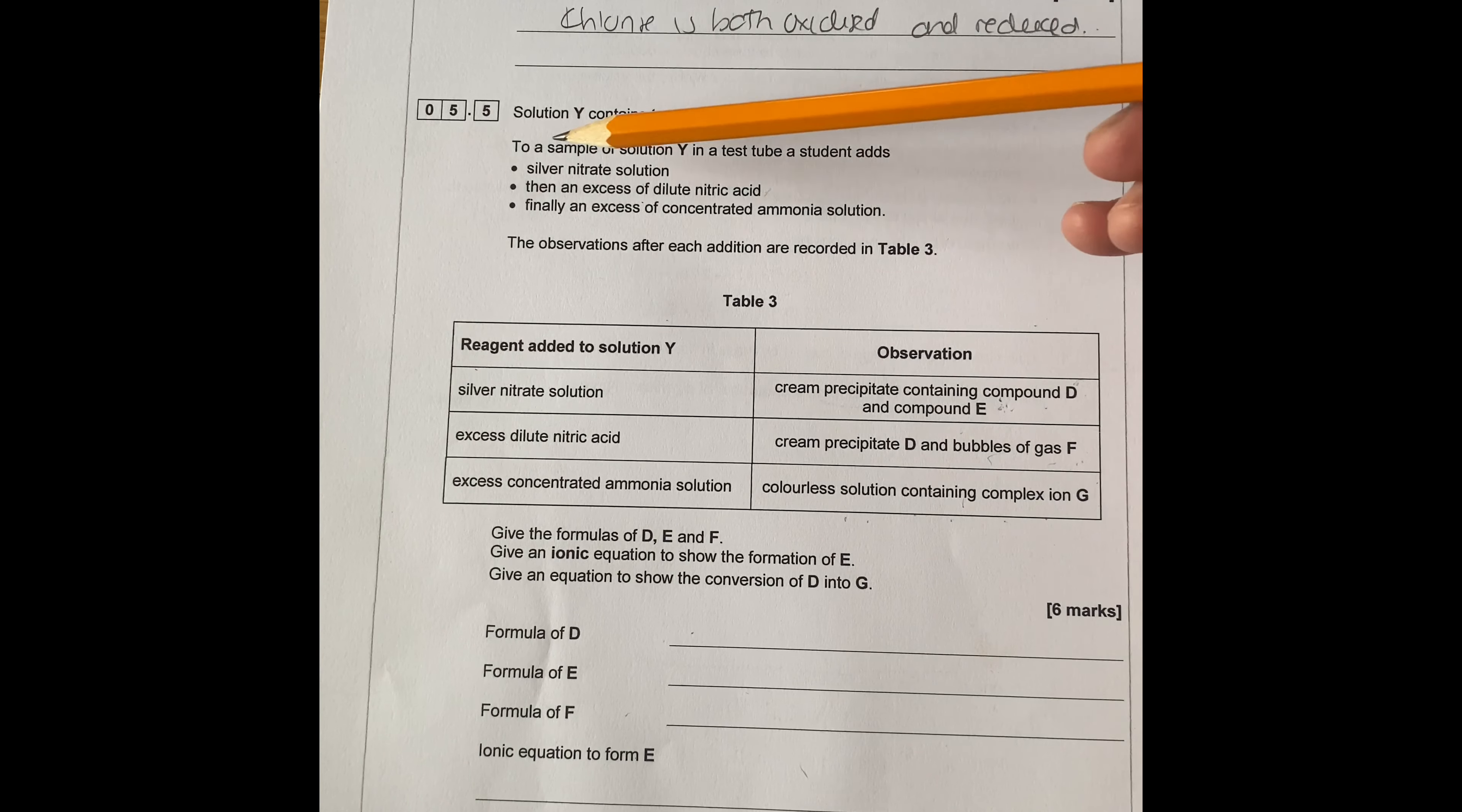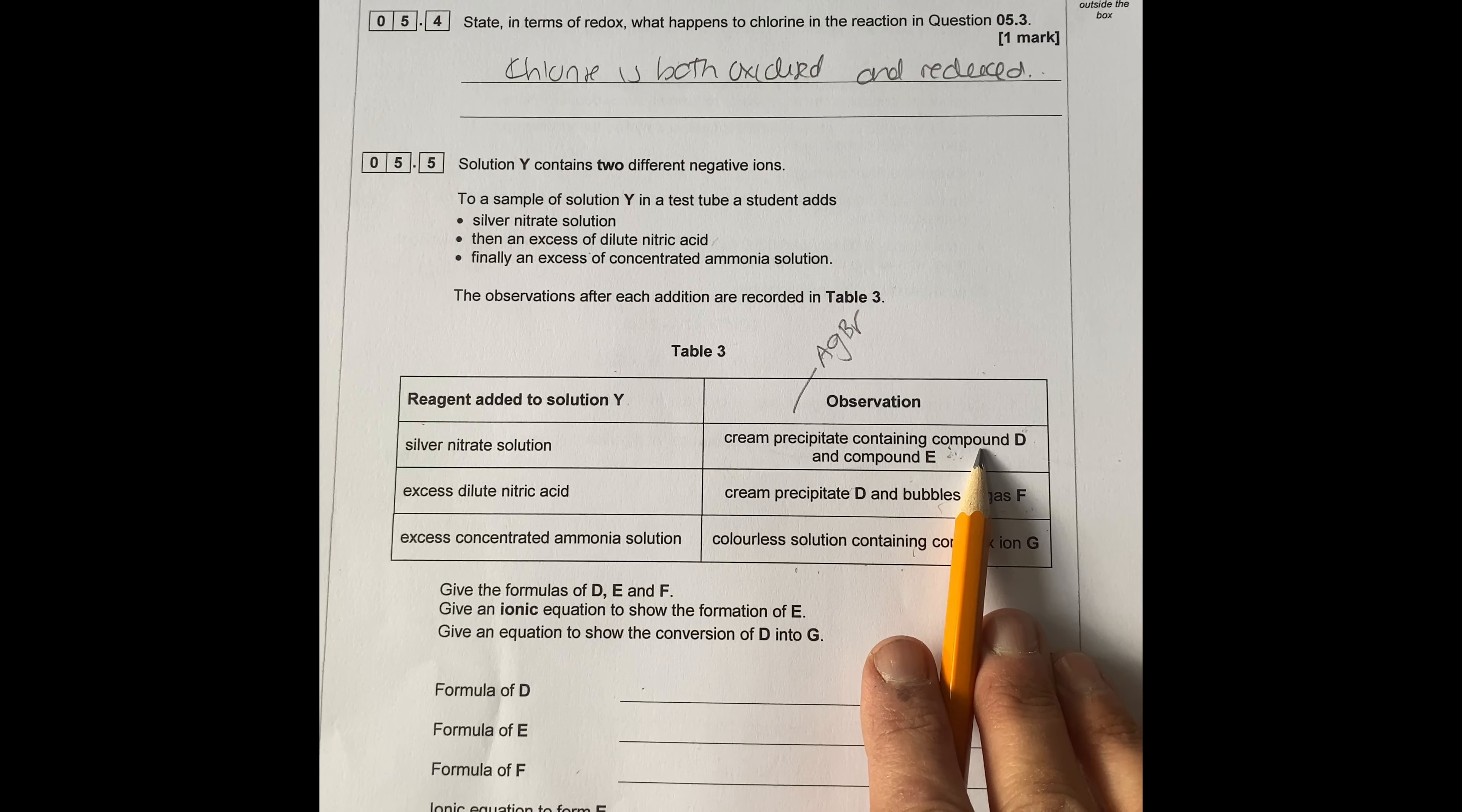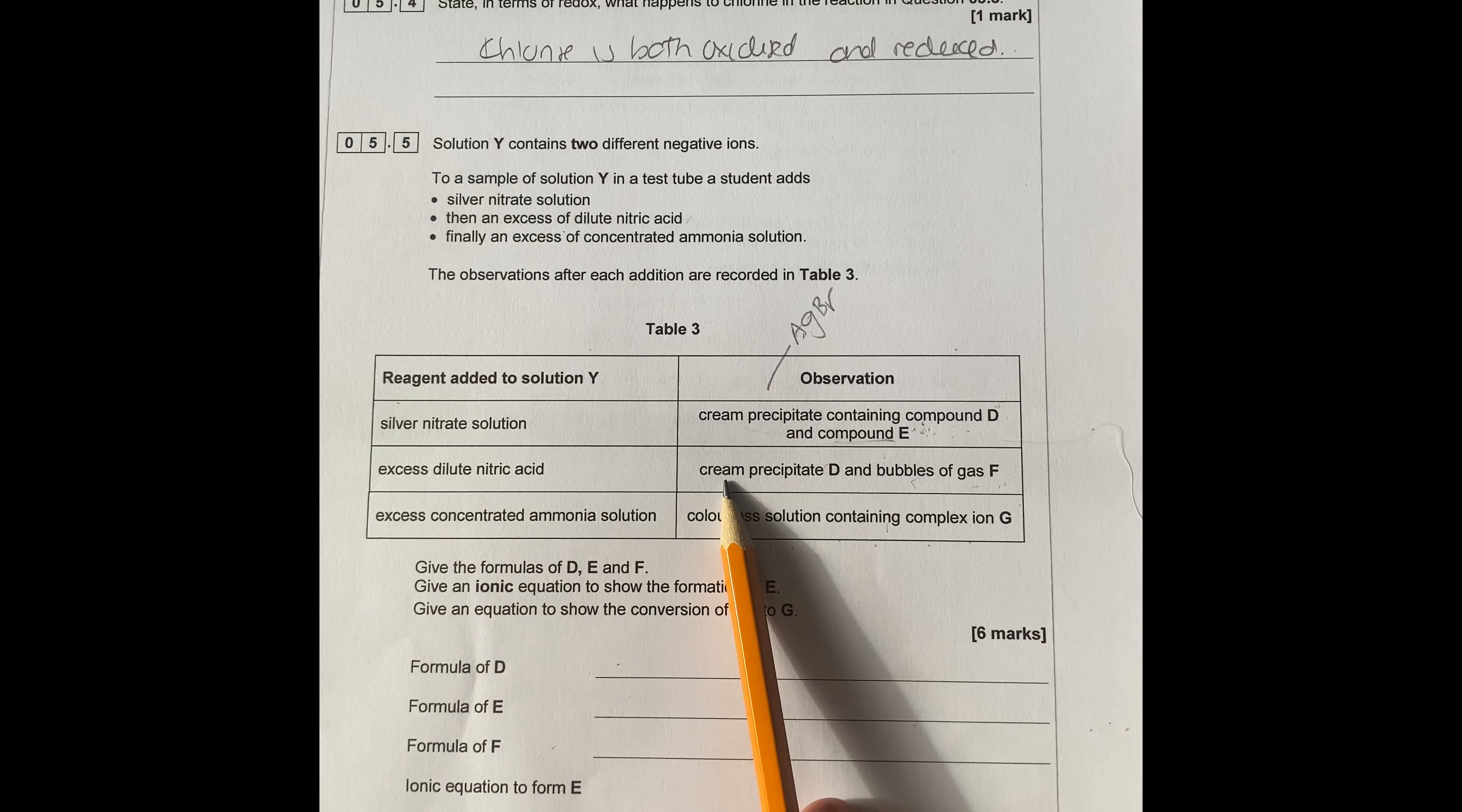Solution Y contains two different negative ions. To a sample of solution Y in a test tube, a student adds silver nitrate solution, then excess dilute nitric acid, finally an excess concentrated ammonia solution. The observation after each addition is recorded in table three. When you add silver nitrate, it's a test for halides. You see a cream precipitate. Your cream precipitate is going to be AgBr because bromide is actually cream, and a compound D.